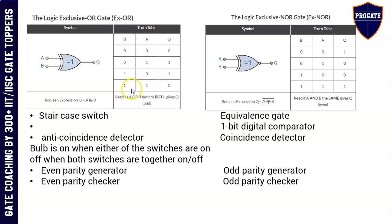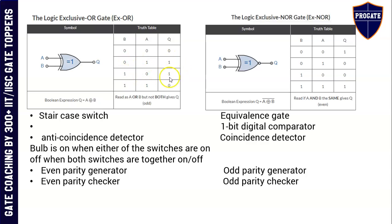If the input is 00 or 11 — that is, A is equal to B — then output is low. If the inputs are opposite, 01 or 10, then output is high. Hence, it is used in staircase switches: we have a switch on the ground floor and one on the first floor, used for bulbs in the staircase. You can turn on at the bottom and off at the top. It is called an anti-coincident detector, because whenever the inputs don't coincide, the output is high.